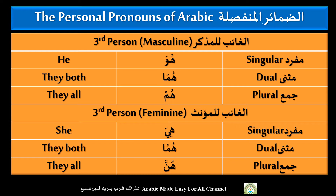These are the personal pronouns. First is: hua, huma, hum — singular, dual, plural. Hua means 'he', huma means 'they both', hum means 'they all'. These three are for masculine.